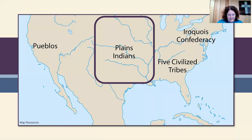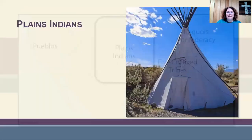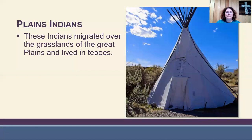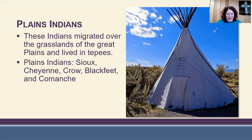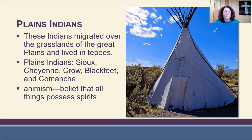Now looking at the Plains Indians: the Pueblos were stationary, but the Plains Indians were nomadic, meaning they migrated around the grasslands in search of food. They lived in teepees because teepees were easily taken down and put back up. The groups that made up the Plains Indians were the Sioux, Cheyenne, Crow, Blackfeet, and the Comanche. They had no single religion; most of all, they practiced animism — the belief that all things possess spirits.